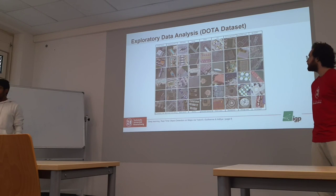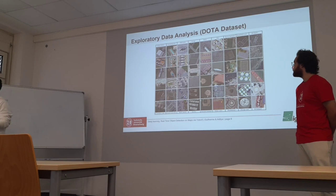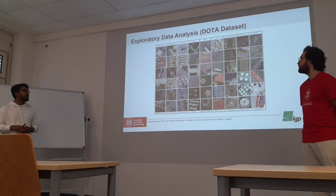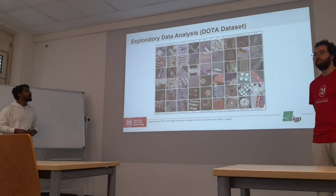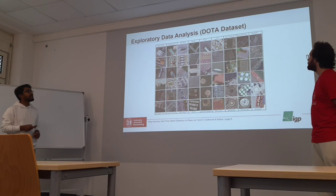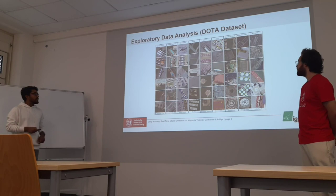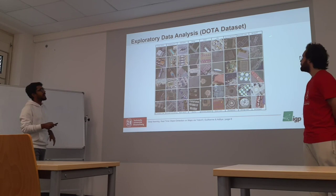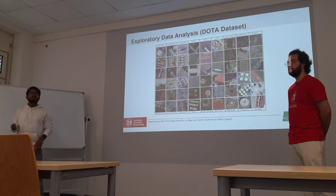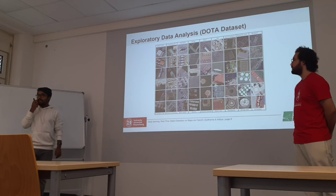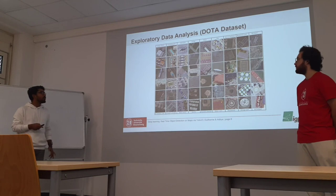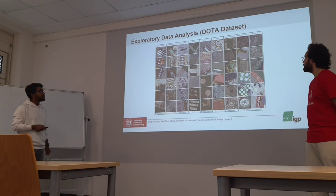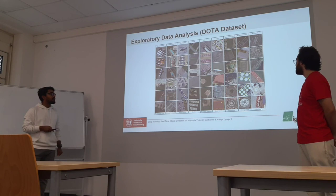There are three versions of the DOTA dataset: 1.0, 1.5, and 2.0. We selected 1.0 because it is large enough and has a leaderboard for comparison. Version 1.0 had 15 categories. Categories highlighted with stars were introduced later. In version 1.5, the container frame category was added and the bounding box count roughly doubled compared to 1.0. In version 2.0, over 8,000 more images were added, and the categories helipad and airport were also added.